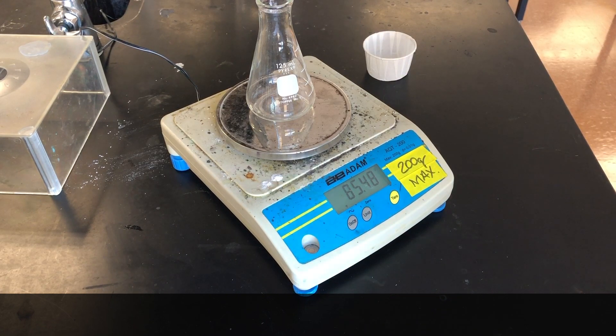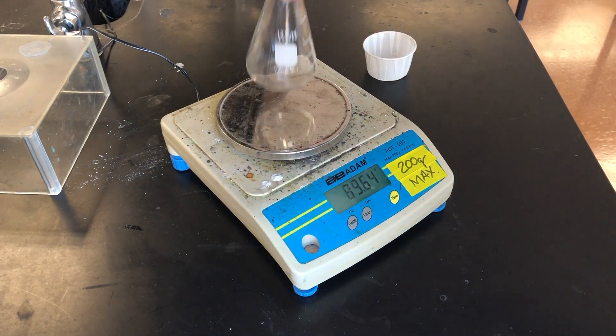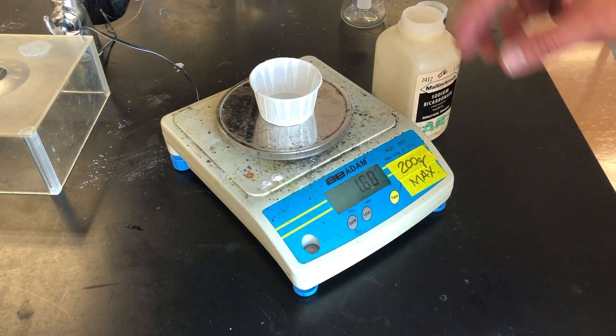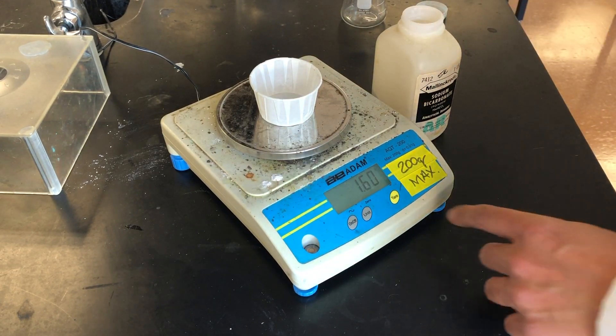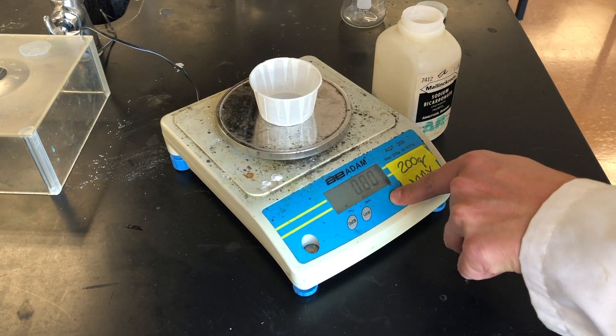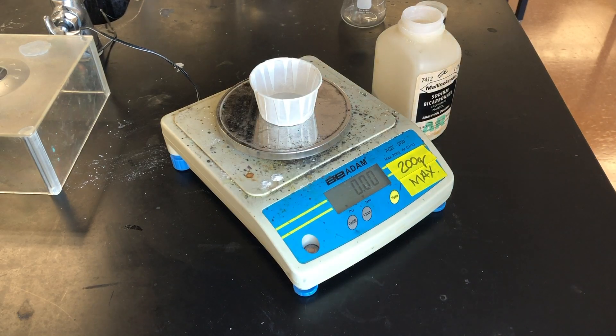We will note that in our data table. 85.48. Next reactant is the sodium bicarbonate. The sodium bicarbonate is a powder, so we'll need a little cup to measure it in. We will zero out the mass of the cup so that we only are calculating or measuring the mass of the powder that we put into the cup.